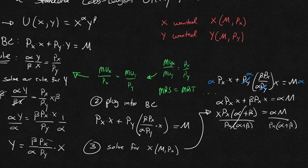And what are we left with? We're left with my x star or my demand function. It's going to be a function of px and m. It's going to equal alpha m over alpha plus beta px.